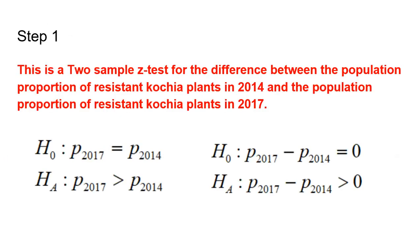First, there are clearly two samples, two independent samples, a sample from 2014 that had nothing to do with a sample from 2017. So this is a two-sample Z test for the difference between the population proportion of resistant Kochia plants in 2014 and the population proportion of resistant Kochia plants in 2017. They like to see that word population because we want to be known that a test is used to make a judgment about population proportions.